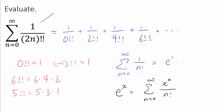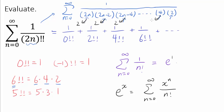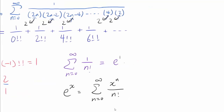Now let's actually try to evaluate it. We have the summation from n equals 0 to infinity of 1 over (2n) double factorial. Let's rewrite it in a more familiar form. Since 2n is even, (2n) double factorial equals 2n times (2n−2) times (2n−4) times ... times 4 times 2. Since every factor is even, we can factor out a 2 from every single one of those terms.